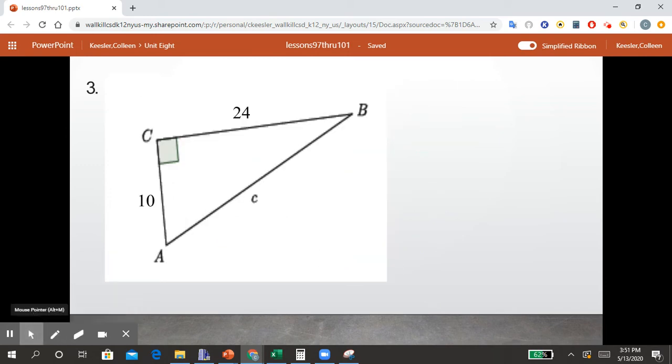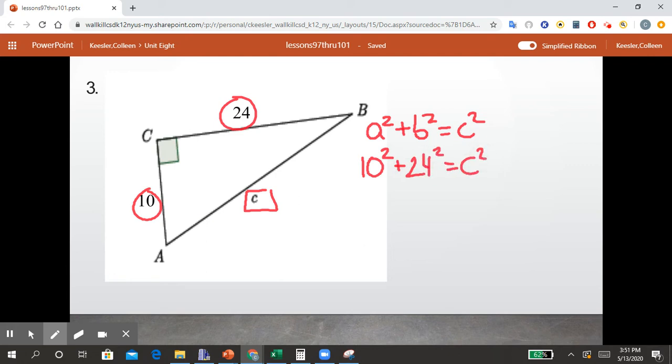Okay, same deal here. We know the lengths of the legs are 10 and 24, and we want to find the hypotenuse. So we're going to do A squared plus B squared equals C squared, which is 10 squared plus 24 squared equals C squared. We know 10 squared is 100. We know 24 squared is 576 equals C squared. Then 100 plus 576 is 676 equals C squared.